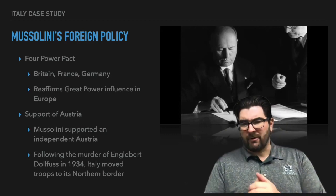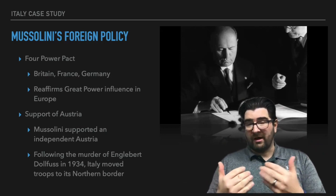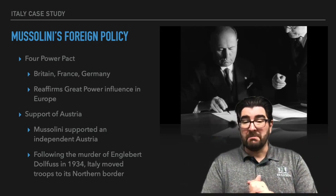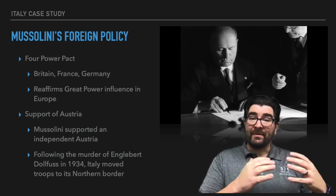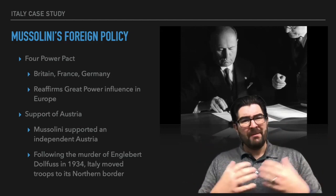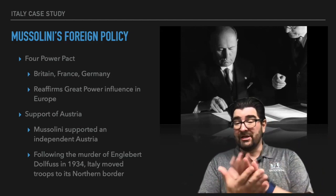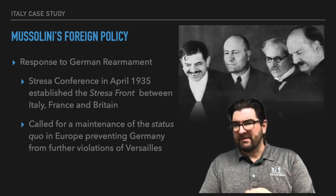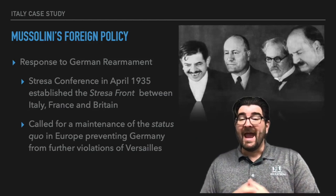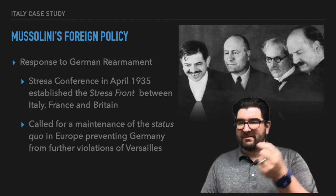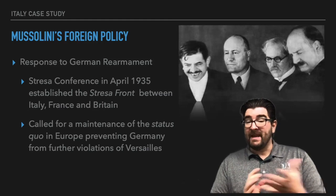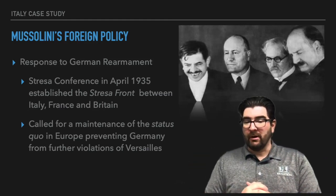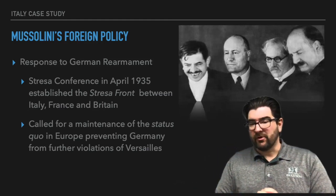He's also going to offer some support to Austria. Adolf Hitler obviously wants a uniting of Germany and Austria — we call that an Anschluss. In 1934, the Austrian chancellor is going to be murdered by Austrian Nazis, and when this happens Italy is going to mobilize some troops to its northern border, basically as a show of force against a possible German threat to Austria. As Germany starts to rearm, Benito Mussolini is going to work with France and Britain to create what is known as the Stresa Front in April of 1935 — Italy, France, and Britain all agreeing to stand together to maintain the status quo of Europe and to prevent Germany from further violations of the Treaty of Versailles.